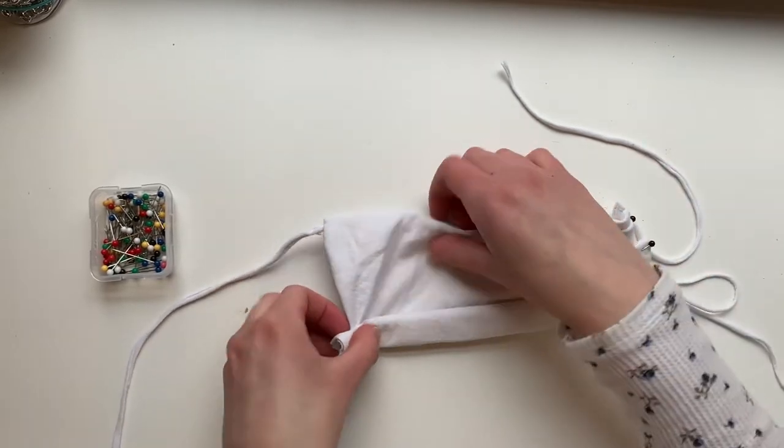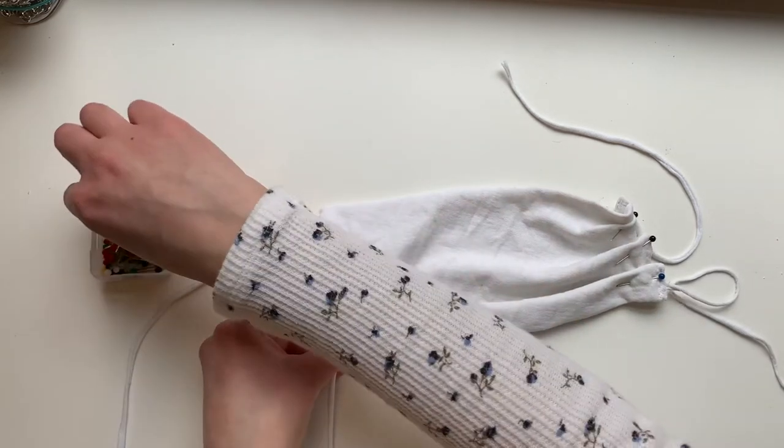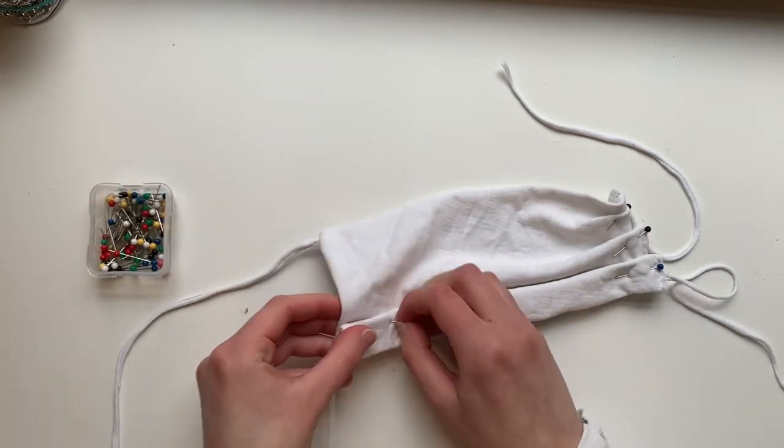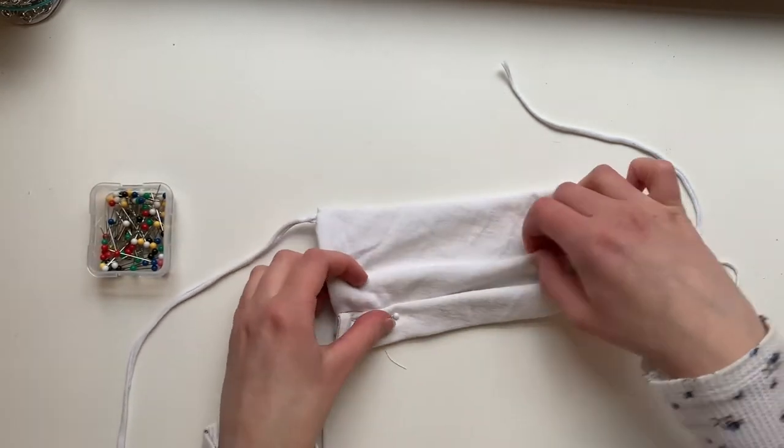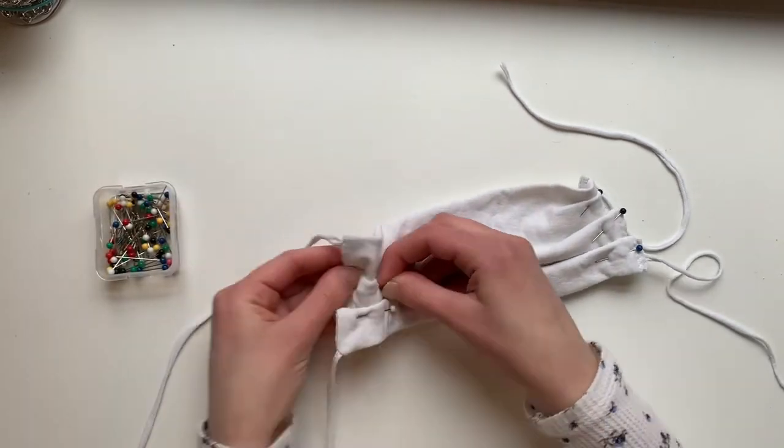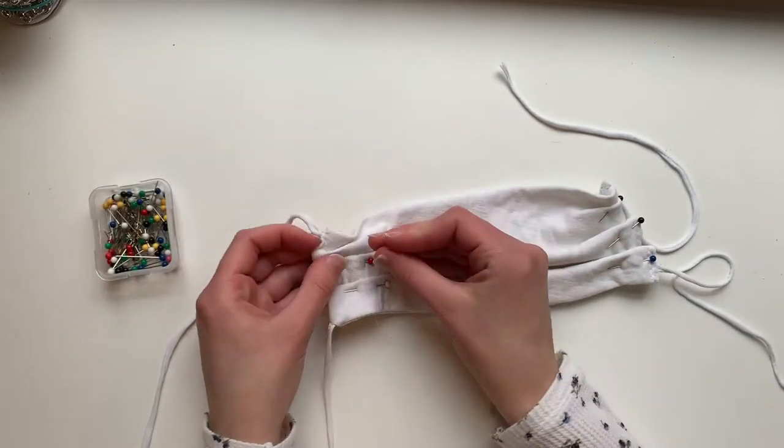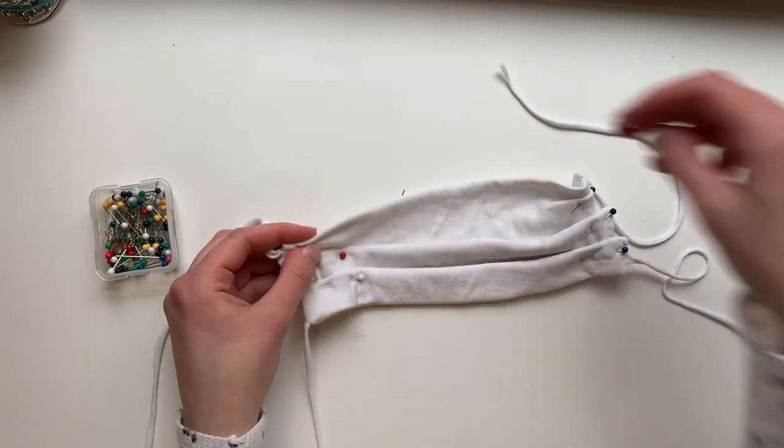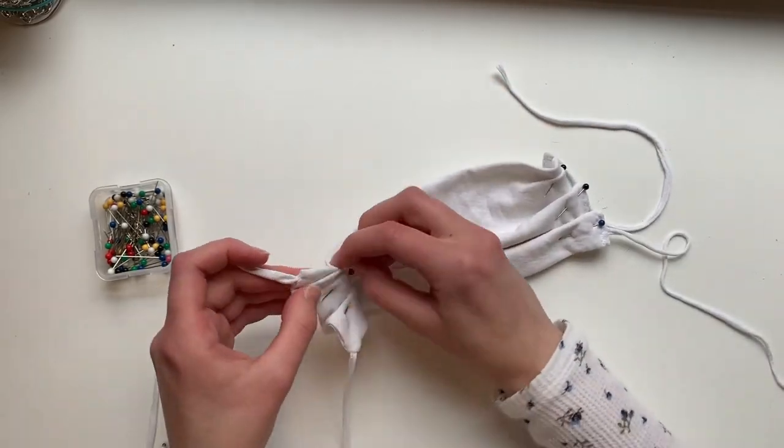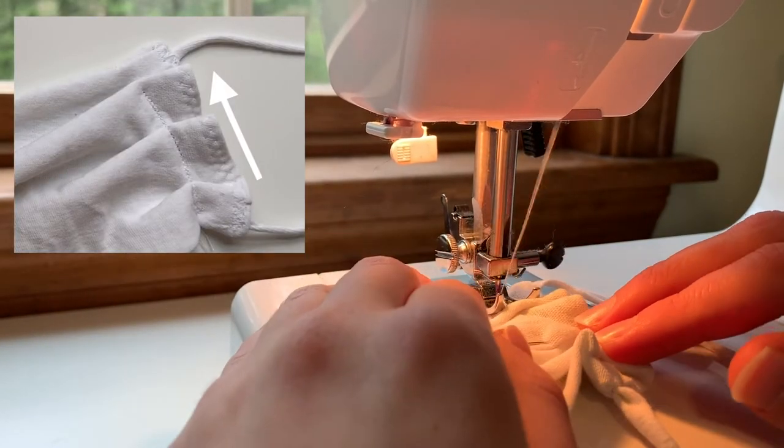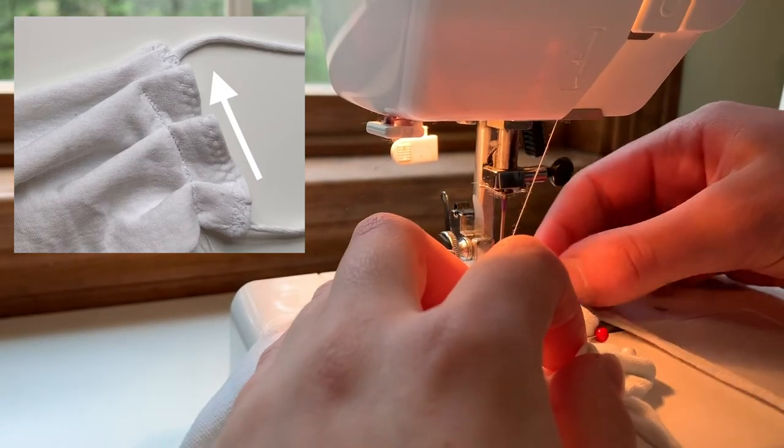You can do the other side by following the fold created by the first side. Now sew this down, making sure to sew off the pleat instead of up onto it.